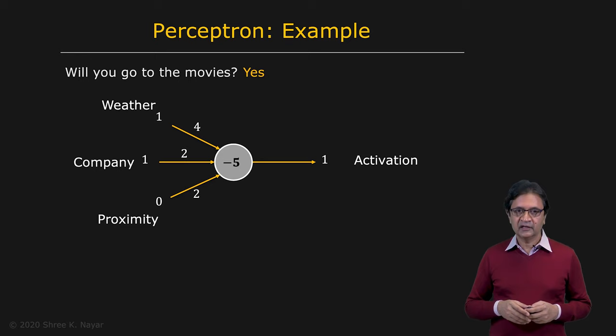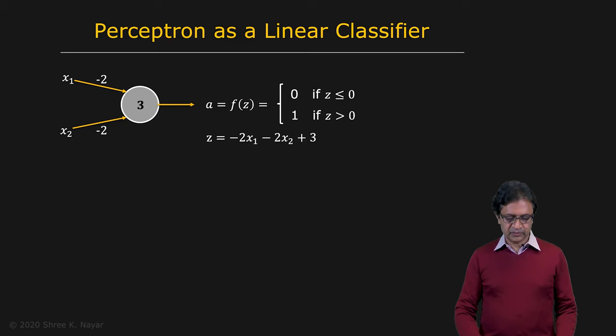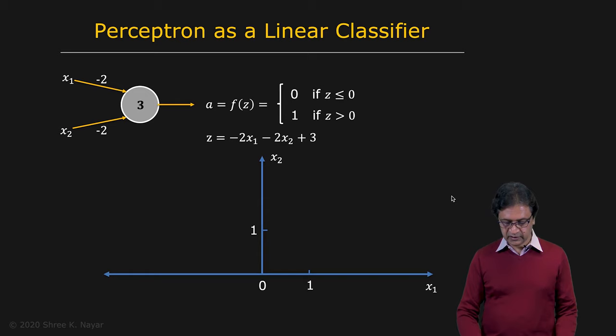Now, let's take a closer look at what a single perceptron is doing. Here is a single perceptron with two inputs, x1 and x2. Let's say the weights are minus two, both of them, and the bias is three. So the output a is equal to the step function applied, the heaviside function applied to z. And what is z? Z is minus two x1 minus two x2 plus three. Let's look at this in the input space. The input space is the x1, x2 space. In the input space, if you look at the right hand side of this equation, we know that that's a straight line.